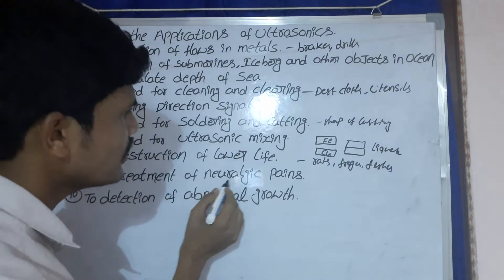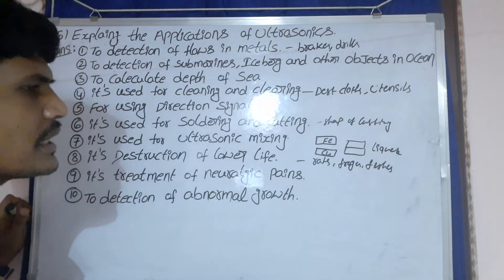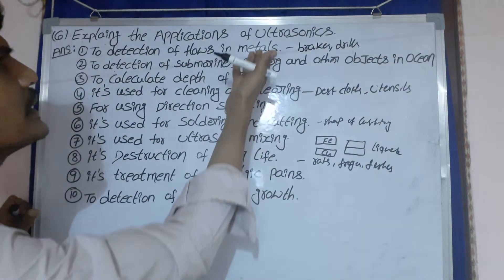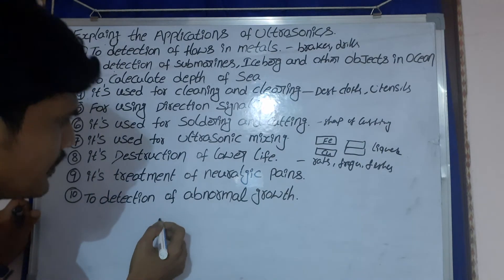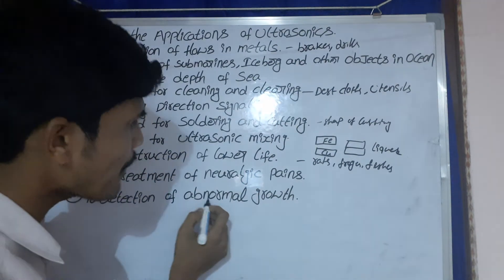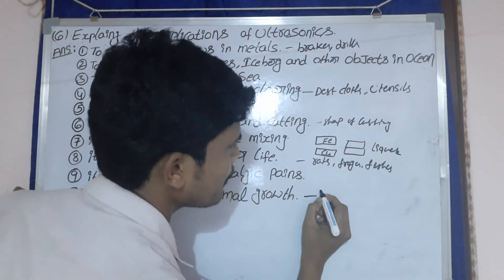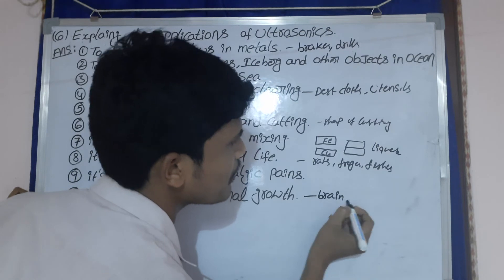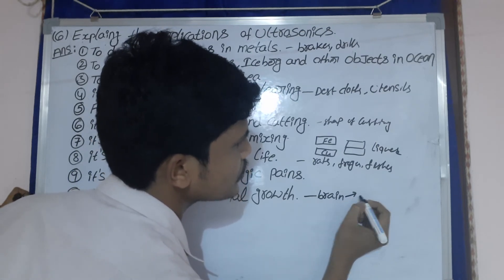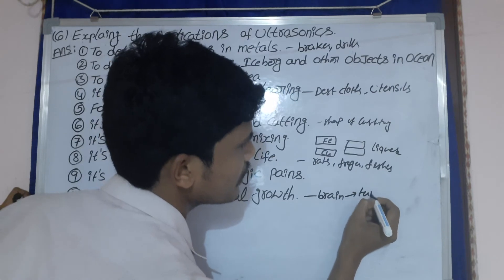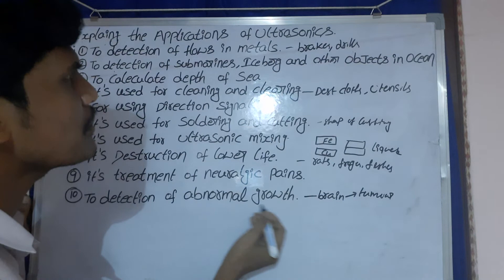Next one: it is used for treatment of neurologic pains. Neurologic problems are treated using ultrasonics. Next one: detection of abnormal growth. Abnormal growth means brain problems such as tumors, which are detected using ultrasonic waves.